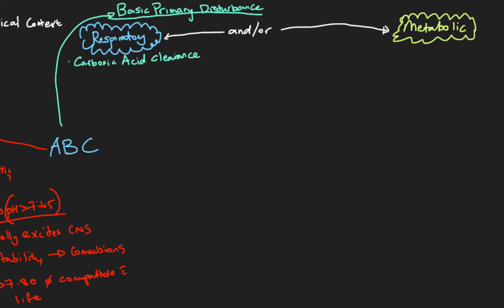Ideally we'd want to measure how much carbonic acid is in the blood to know whether we're doing a good job clearing it. Unfortunately, carbonic acid levels are very low in the blood and it's not feasible to measure directly. Luckily, carbon dioxide has a direct linear relationship with carbonic acid. The PaCO2 — the partial pressure of CO2 in arterial blood — has a direct linear relationship with carbonic acid.